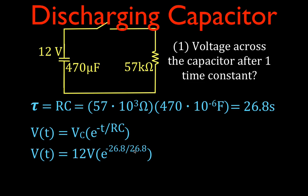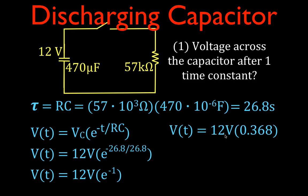So it's 12 volts times e raised to the power of minus 26.8 over 26.8, or simply 12 volts times e to the minus 1. That gives us 12 volts times 0.368, which means that after one time constant, the voltage across the capacitor will be 36.8% of the original initial voltage — which is 4.41 volts.